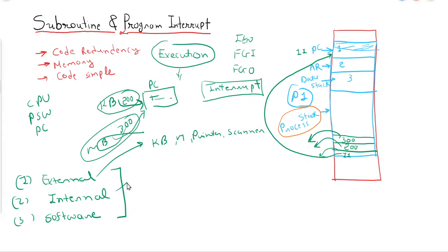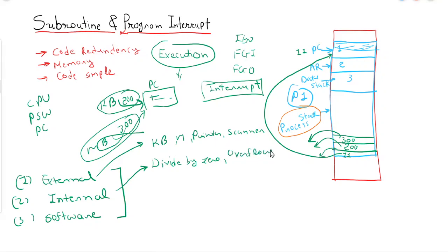What is an internal interrupt? An interrupt caused by the CPU itself is an internal interrupt. For example, divide by zero, which is caused by the CPU itself. Also, in the register stack, overflow — stack overflow and stack underflow — will also be considered as an internal interrupt.